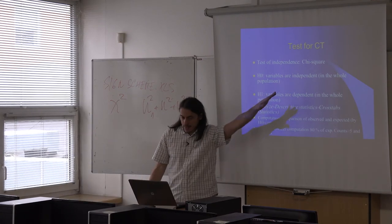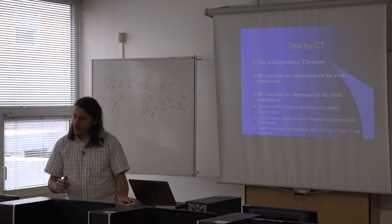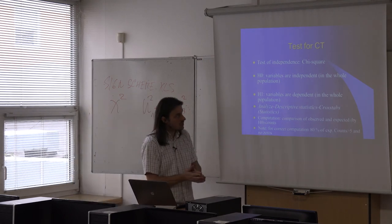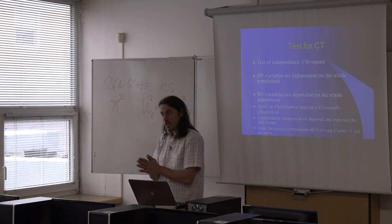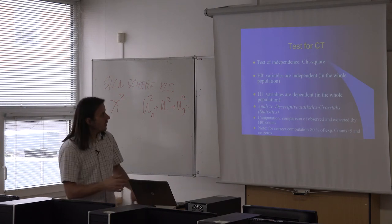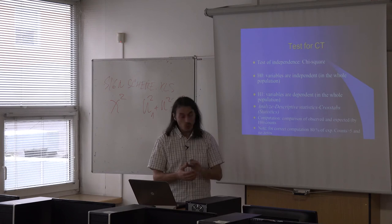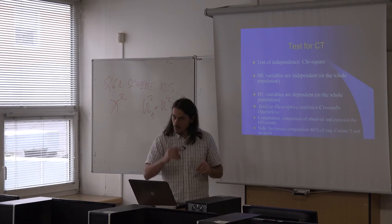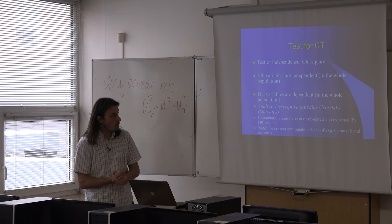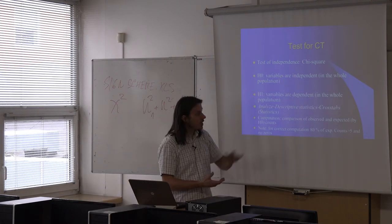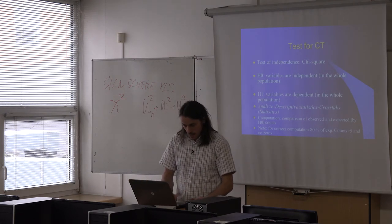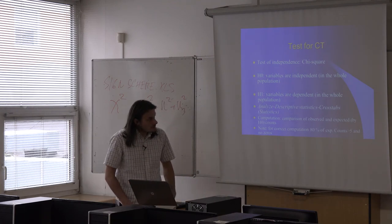The null hypothesis for the chi-squared test of independence is different from previous tests about differences in means or medians — now hypotheses are about relationship or independence. The null hypothesis says there is no relationship: variables are independent. In other words, you may see differences in your sample, but there is no difference in the whole population. The alternative hypothesis says variables are dependent.